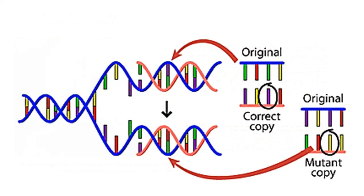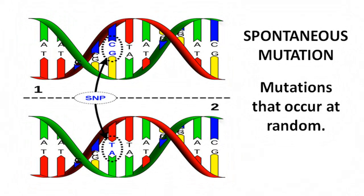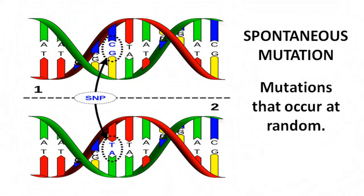What are the causes of mutations? Mutations are generally random events. DNA provides the variation that enables species to evolve. Mutations that occur at random are called spontaneous mutations. However, it is known that many environmental agents also cause mutations. Exposure to X-rays, ultraviolet light, radioactive substances, or certain chemicals can cause changes in DNA.